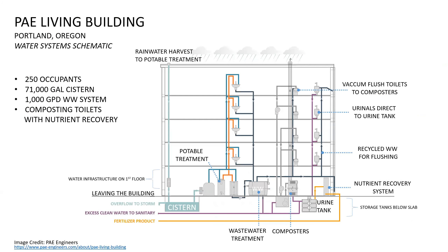Performance metrics for the PAE Living Building include 2,737 building products vetted to be red list-free of toxins, nearly 2,000 tons of material diverted from landfill, approximately 2,000 tons of embodied carbon, approximately 180,000 gallons of water used per year, and a projected 2–5% productivity increase for staff. The Living Building Challenge has seven petals: Place, Water, Energy, Health and Happiness, Materials, Equity, and Beauty.